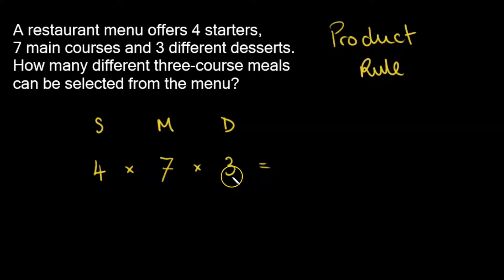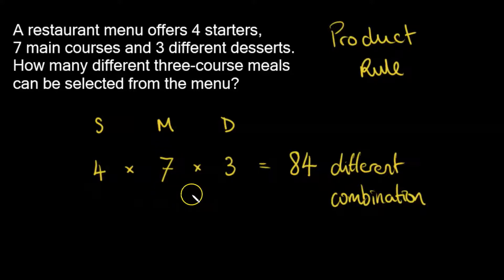So let's do this very quickly. 21 times four, that would give me 84 different combinations. Let's write that down. Hopefully that makes sense. I had four choices and seven choices and three choices. So I multiply the three numbers together in order to get the total number of different combinations. Okay, let's move on to a second question then.